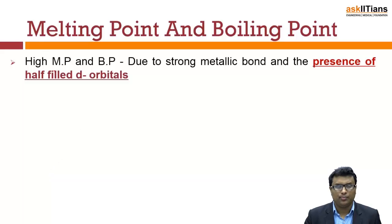Transition elements have high melting point and boiling point. What is the reason? The reason is strong metallic bond. When you have metallic bonds, they have strong melting and boiling points. Also, another reason is that they have half-filled d orbitals.